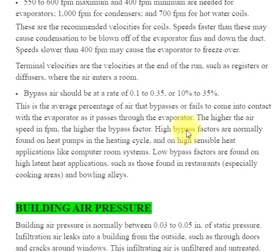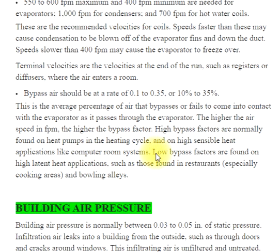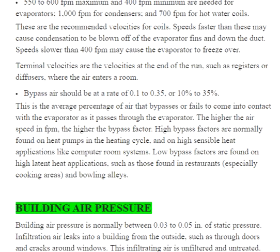High bypass factors are normally found on heat pumps in the heating cycle and on high sensible heat applications like computer room systems. Low bypass factors are found on high latent heat applications, such as those found in restaurants, especially cooking areas, and bowling alleys.